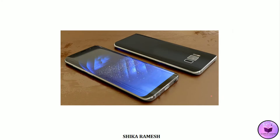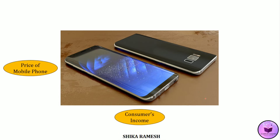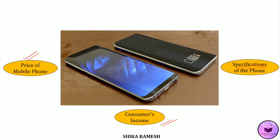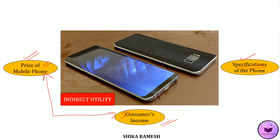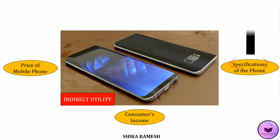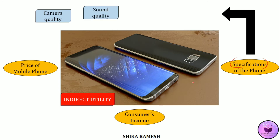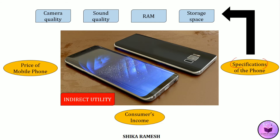For example, when we are purchasing a mobile phone, we usually look at the price of the mobile phone, our income, as well as the specifications. First, we set a budget limit based on our income, then we search for all the necessary specifications or features we want, priced within our budget limit. When we find a mobile phone priced within our budget with all the necessary specifications, the utility we receive from knowing that it is priced within our budget limit — so we'll be able to purchase it — that is the indirect utility. On the other hand, the specifications such as camera quality, sound quality, RAM, or high storage space — after purchasing the phone, the utility derived from these features is the direct utility.